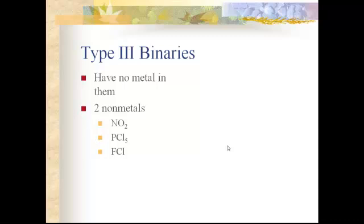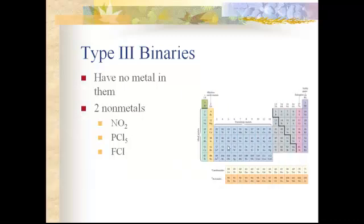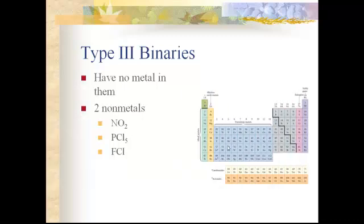And so here are some other examples: NO2, nitrogen dioxide; PCl5, phosphorus pentachloride; or FCl, which is fluorine monochloride. Again, notice if you look at your periodic table that none of those are metals. They are all binary compounds of two non-metals. Once again, here's the periodic table.